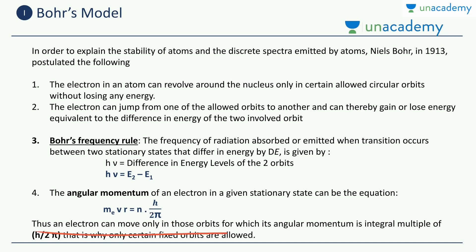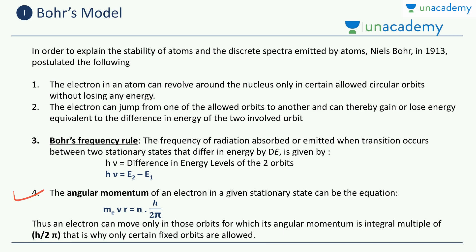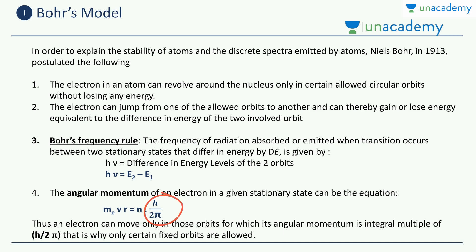An electron can move only in those orbits for which its angular momentum is an integral multiple of h/2π. This is why only certain fixed orbits are allowed, consistent with the first postulate that only certain allowed circular orbits exist. So m·v·r = n·(h/2π), where m is the mass of the electron, v is its velocity, r is the orbital radius from the nucleus, and n is the orbit number. These are the four postulates of Bohr's model.